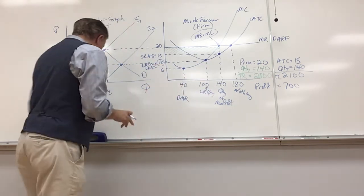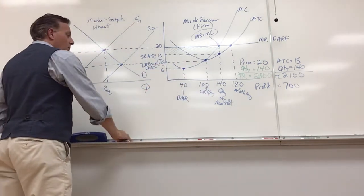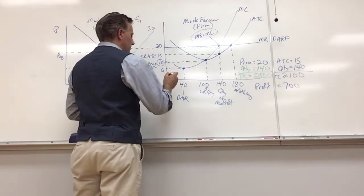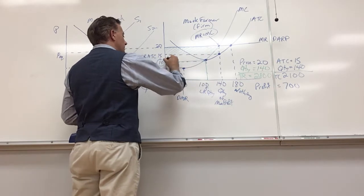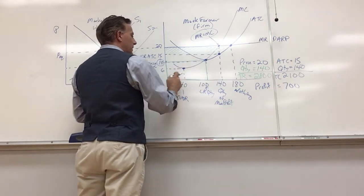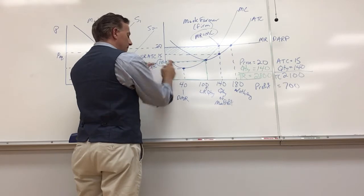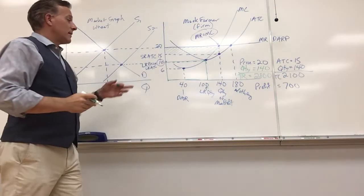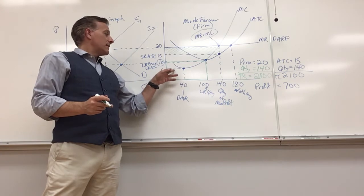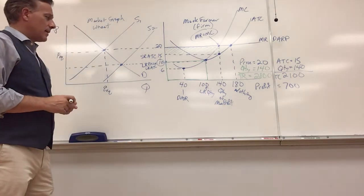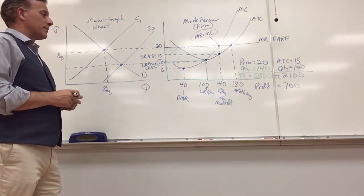So 10 is my long run price and my long run average total cost, and my long run quantity is 100. I really just have one rectangle in the long run. Total revenue equals total cost, and it's that rectangle: 10 times 100. Total revenue is 1000 in the long run, total cost is 1000, and the profit equals zero. It's break-even.